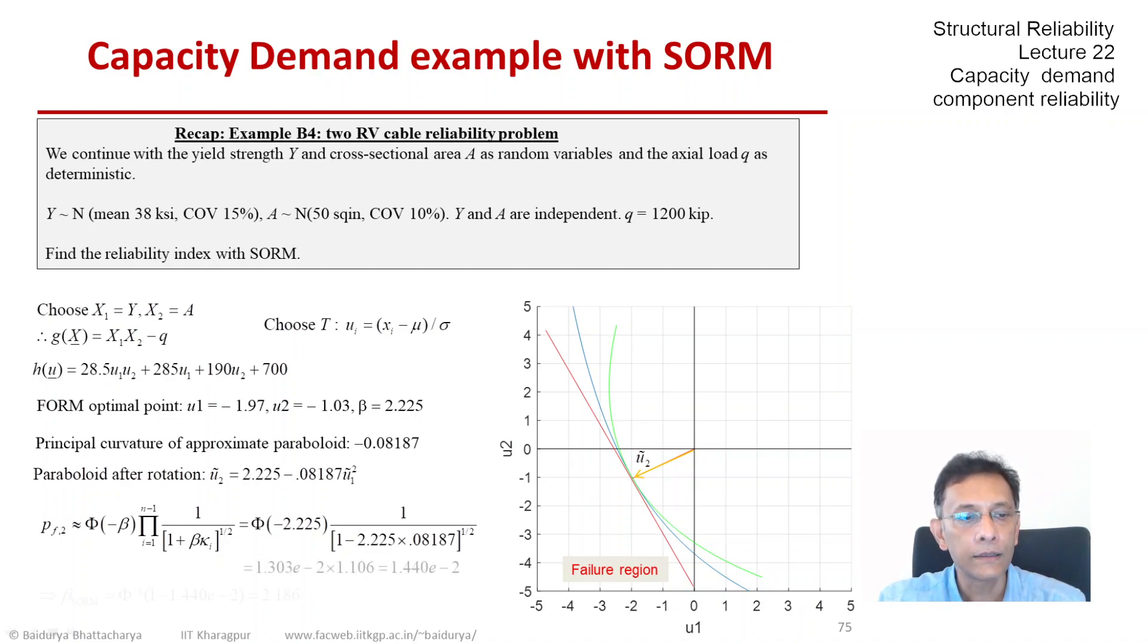So that turns out to be 1.44 times 10 to the minus 2 and once we take the normal CDF inverse of that, we can get the equivalent beta value in SORM and that gives us about 2.186.